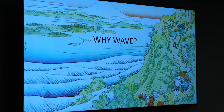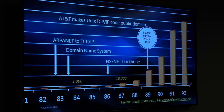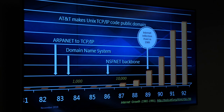Why did WAVE get created? It was because of a slide in the paper I published at NAB. This shows the number of hosts worldwide back in the 80s, with an inflection point in 1989 — that's when AT&T made TCP/IP public domain. Everyone said: I can just get TCP/IP, put it on my device, and now I've got the internet. I can network all my computers in my office without paying Banyan Vines or all these different companies. Every device was going to come pre-enabled for internet access and local network access.